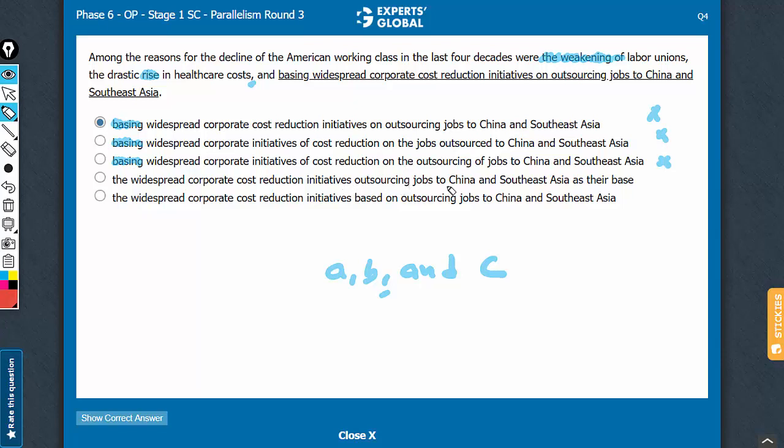Initiatives outsourcing jobs to China and Southeast Asia as their base - this part is awkward and fails to convey the intended meaning. The meaning is initiatives based on outsourcing jobs to China and Southeast Asia. So, D can go.